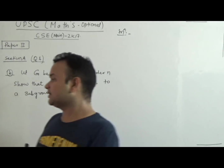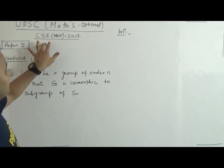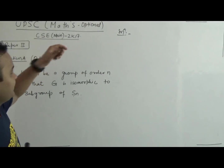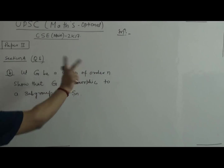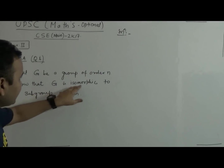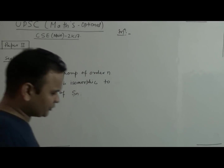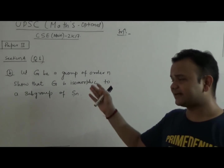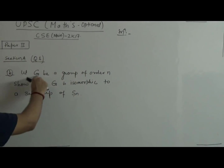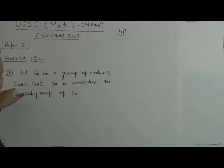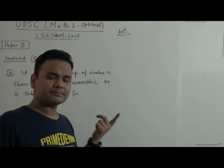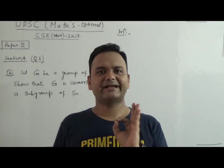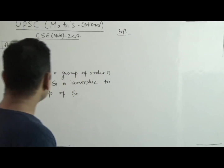So let's understand this particular question. This is UPSC Mathematics Question Paper 2017, Paper 2, Section A, Question 1. The question: Let G be a group of order N. Show that G is isomorphic to a subgroup of S_N. The question is simple and straightforward. They expect you to also write the answer in a simple way.